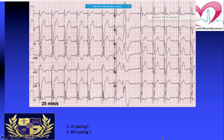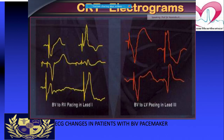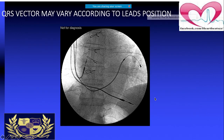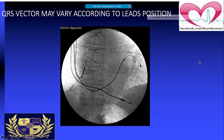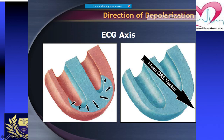In biventricular pacing with the RV lead at the apex, you notice in V1 a dominant R wave and right superior axis in the frontal plane, and the QRS complex is relatively more narrow at nearly 170 milliseconds than during single chamber RV or LV pacing. This is the mean QRS vector. In ECG principles, you get a positive wave when a depolarization front is coming towards the lead, and a negative wave when depolarization is moving away.